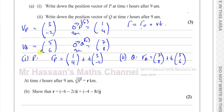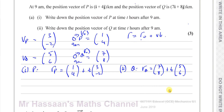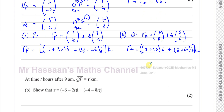Writing these in i and j form as given in the question: the position vector of P is (1 + 3T)i + (4 − 2T)j kilometres, and the position vector of Q is (7 + 5T)i + (8 + 6T)j kilometres. That's the position vector of P and Q in the form of i and j.